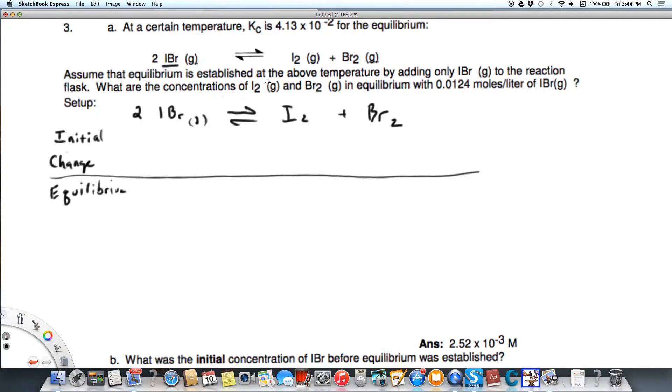We need to find the concentrations of I2 and Br2, and we are given the equilibrium concentration of IBr. That's 0.0124 molar. That's given, so we need to really work backwards.